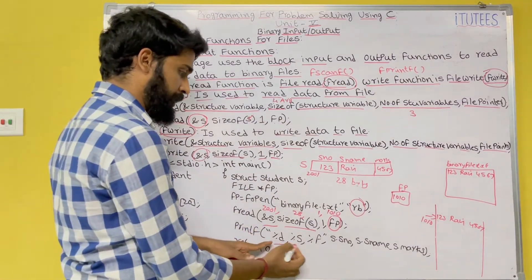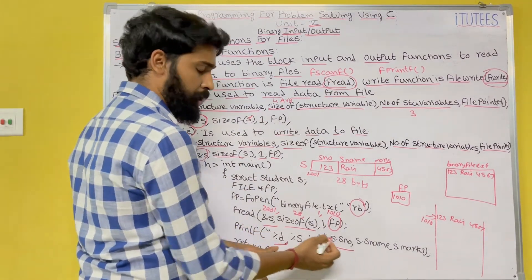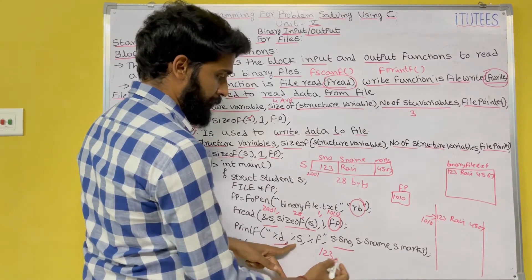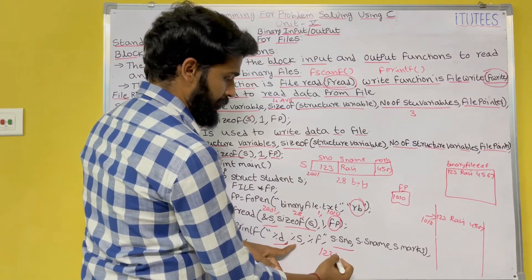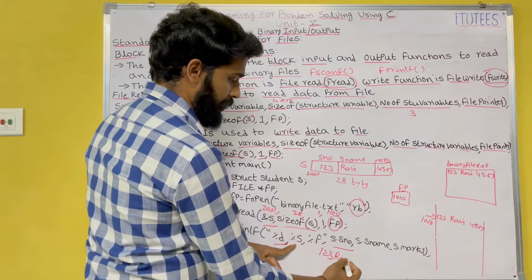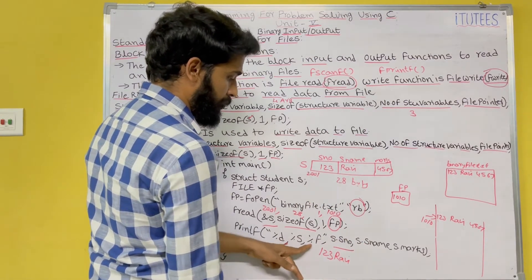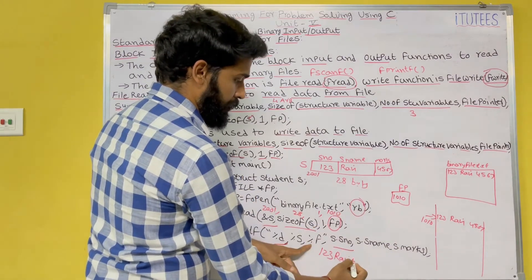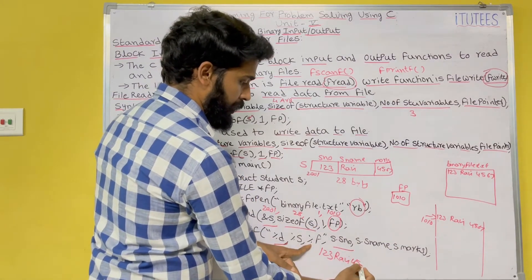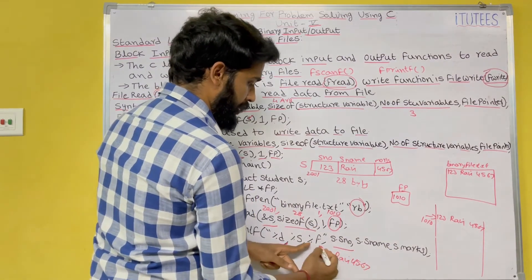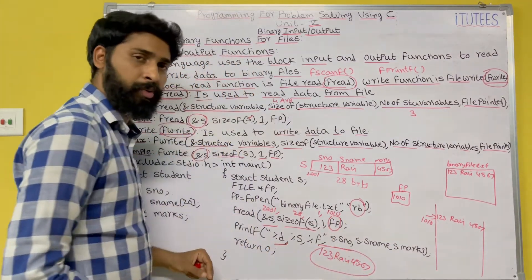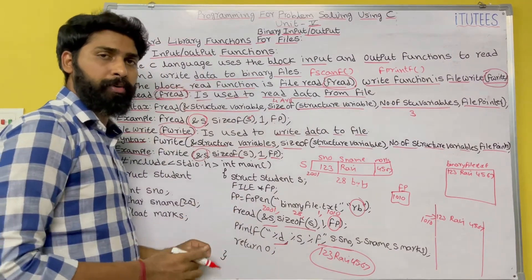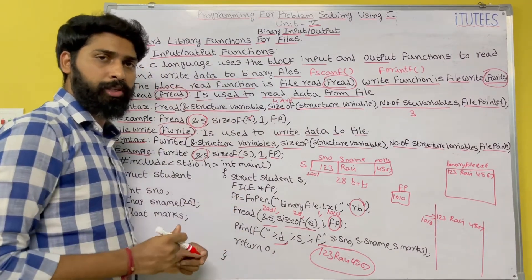If I print %d s.s_number, it prints 123 on the monitor. %s s.s_name displays Ravi on the monitor. %f marks displays 45.67. It displays like this. We will see the exact output when we execute this program.